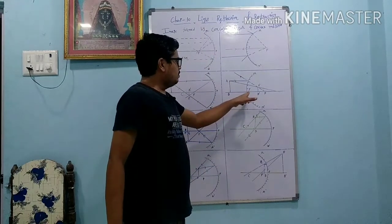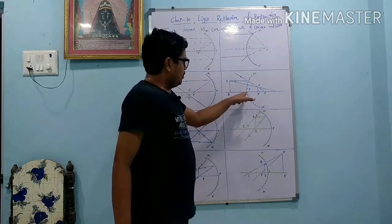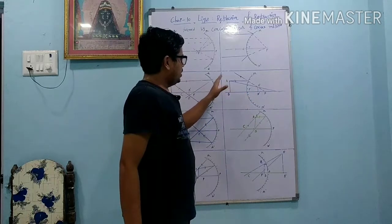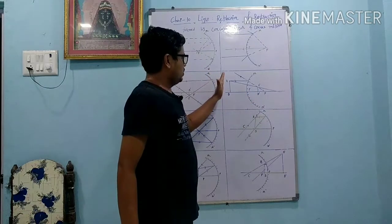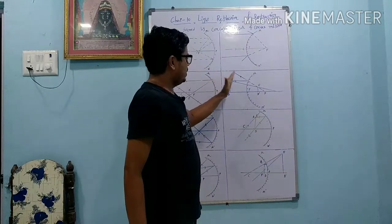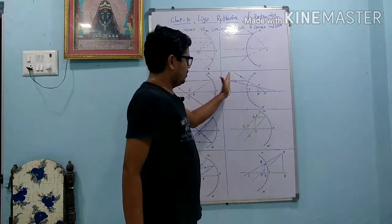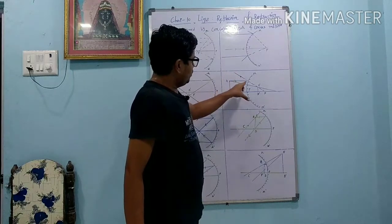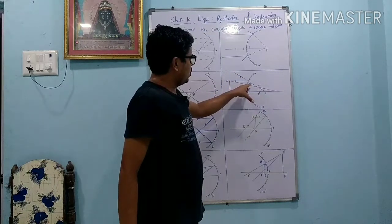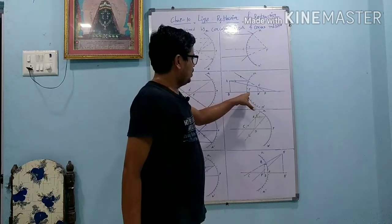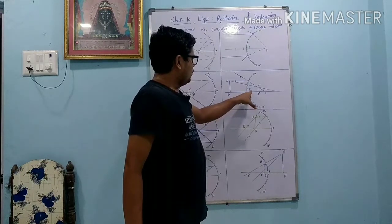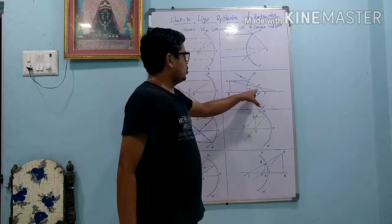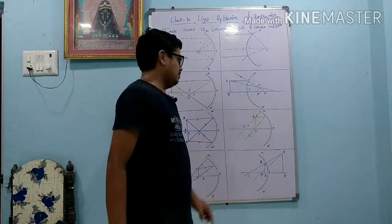Similarly, if we keep the object between pole and infinite distance - here AB is the object - after reflection the rays do not meet because they are divergent rays. So the image we get is virtual and erect, and the image is obtained between the principal focus and pole. The image is virtual, erect, and diminished.